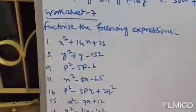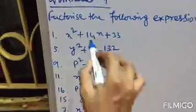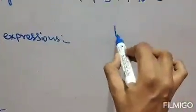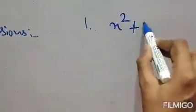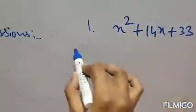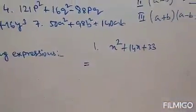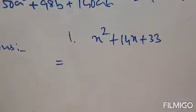Coming to worksheet 7, which is a little tricky. The questions in worksheet 7 also involve factorization but use a special technique called middle term factorization. We will break the middle term. Question 1 from worksheet 7 is: x²+14x+33.